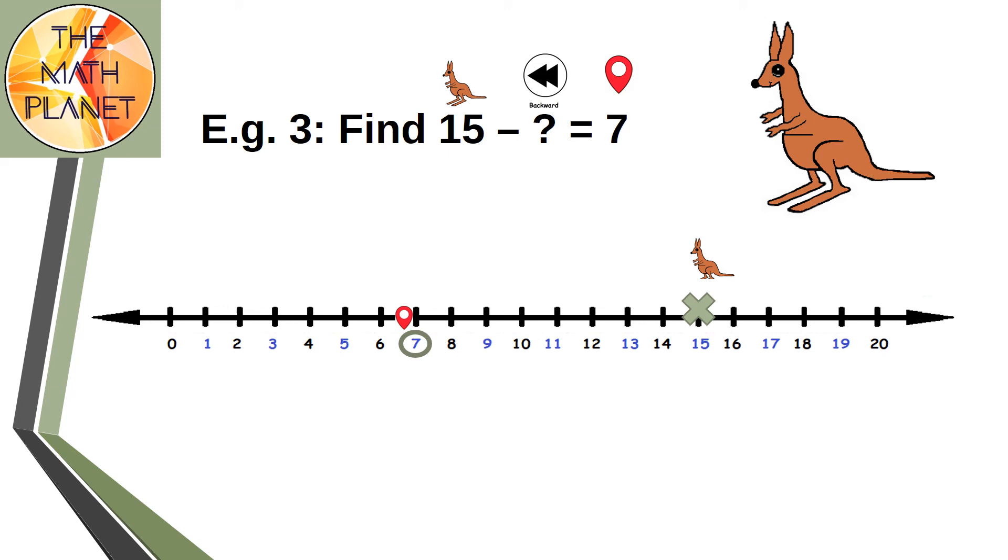I just need to count how many jumps I will perform. Here's 1, 2, 3, 4, 5, 6, 7, and 8 jumps. So 15 minus 8 equals 7.